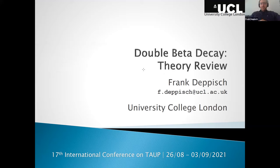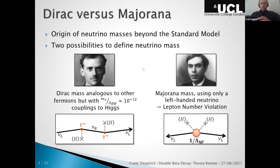I will give a review on double beta decay from the theory perspective, with the experimental perspective following afterwards. Many of the things you will have heard: neutrinos, double beta decay is a lepton number violating process, and it probes the Majorana nature of neutrinos — essentially trying to answer the crucial question of whether neutrinos are Majorana or Dirac particles, which is yet unresolved.